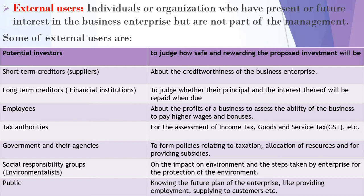Government and their agencies use accounting information to form policies relating to taxation, allocation of resources, and for providing subsidies. Social responsibility groups such as environmentalists are interested in the impact on the environment and steps taken by the enterprise for environmental protection. The general public also wants to know the future plans of the enterprise, including providing employment and supplying goods to customers.